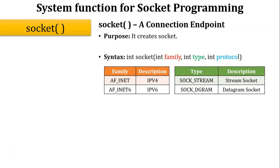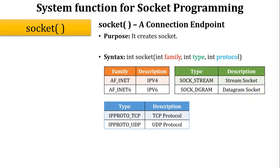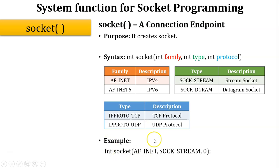The next argument is type — there are two main types of socket: stream socket and datagram socket. The third argument is protocol — either TCP or UDP. In programming: int socket(AF_INET, SOCK_STREAM, 0). AF_INET means IPv4, SOCK_STREAM means stream socket, and protocol 0 means the default protocol. If stream socket is used, the default protocol is TCP; if datagram socket is used, the default protocol is UDP.